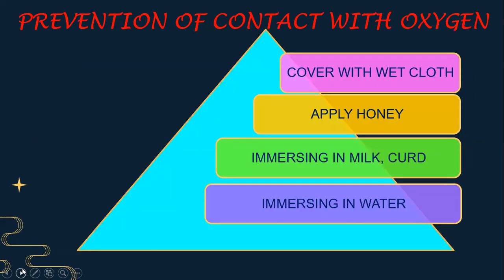Another common method is prevention of contact with oxygen, which is regularly done in our daily routine. The cut fruits or vegetables can be covered with a wet cloth, applied with honey, or immersed in milk, curd, buttermilk, or water to reduce contact with oxygen and thereby prevent enzymatic browning.